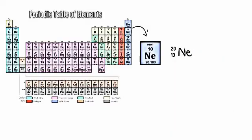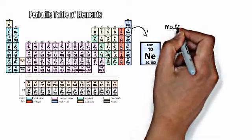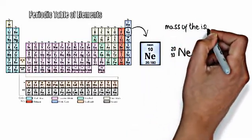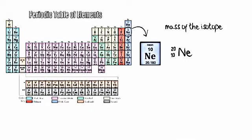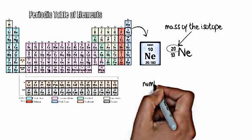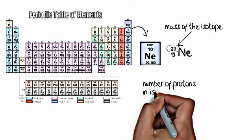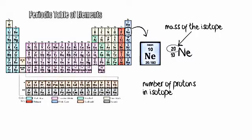Let's talk about neon-20, which would be a mass of 20. The mass of the isotope would be 20. That's the top number in the isotopic label here. The number of protons, which is the charge, would be the 10. That's how we write an isotopic label.